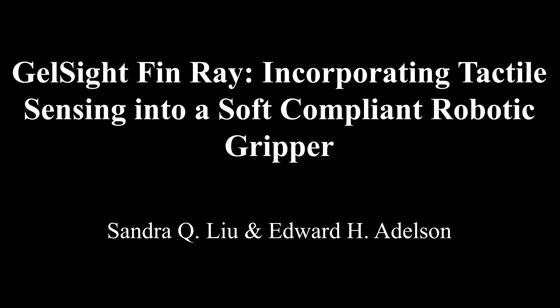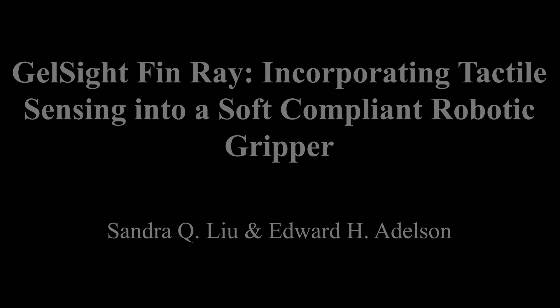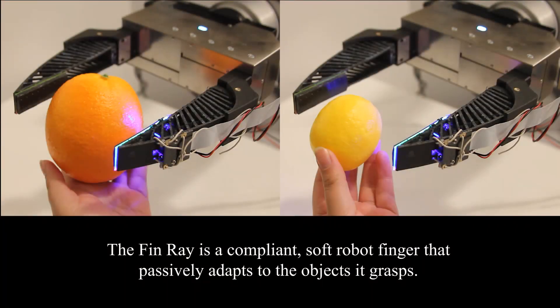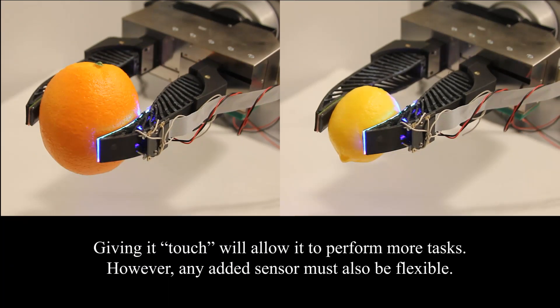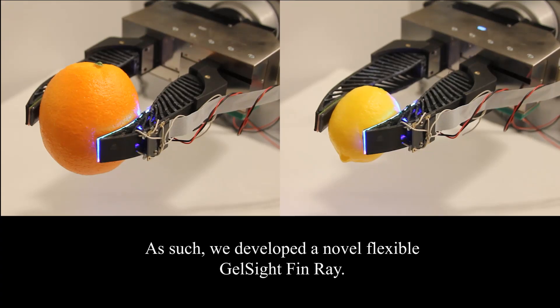GelSight FinRay, incorporating tactile sensing into a soft compliant robotic gripper. The FinRay is a compliant soft robot finger that passively adapts to the objects it grasps. Giving it touch will allow it to perform more tasks. However, any added sensor must also be flexible. As such, we developed a novel flexible GelSight FinRay.